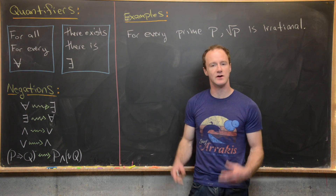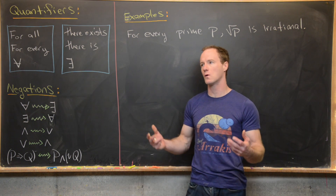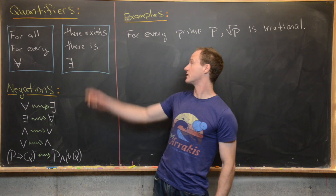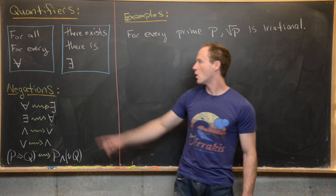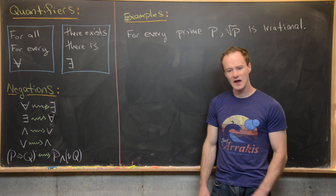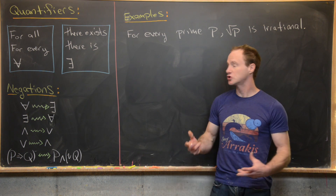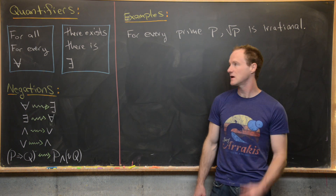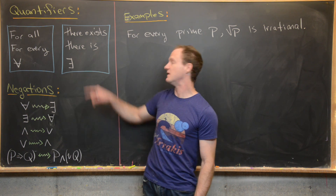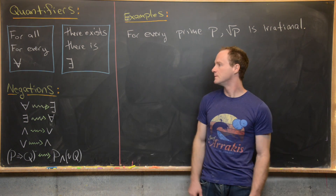There's another quantifier known as 'there exists,' and this means something is true for at least one element of a set or at least one thing that has some certain property. That's usually written as 'there exists,' 'there is,' or this backwards E. Sometimes there'll be this notion of 'there exists a unique something,' denoted by the there exists symbol with an exclamation point. If you ever see that, that means there exists a unique something.